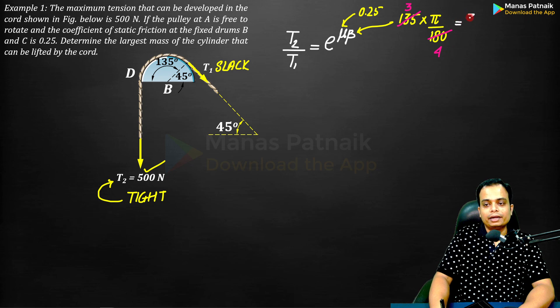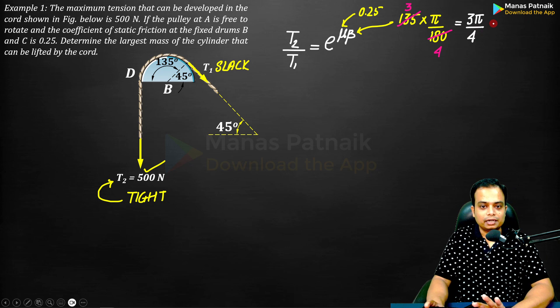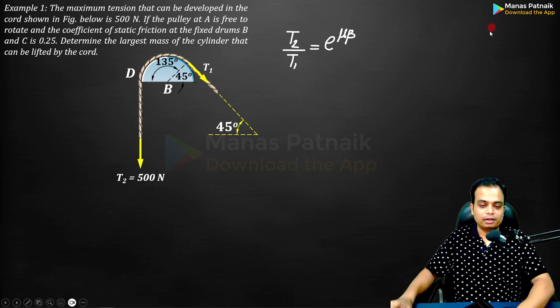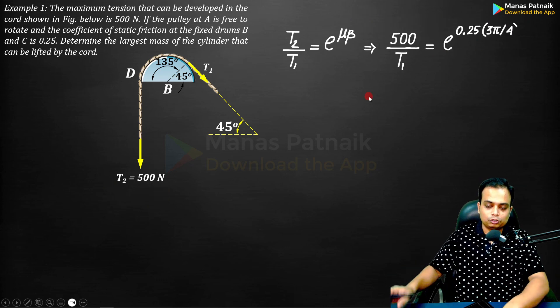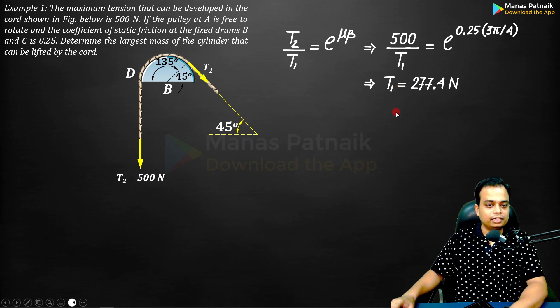On solving this you're going to get angle beta in radians as 3 pi over 4. Just plug in this value and on solving for T1, this is what you get: 277.4.